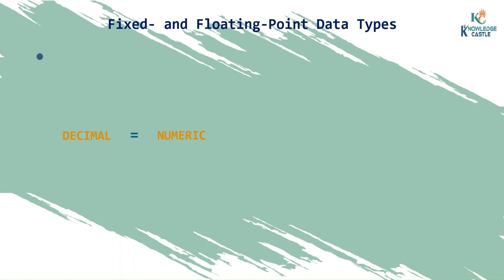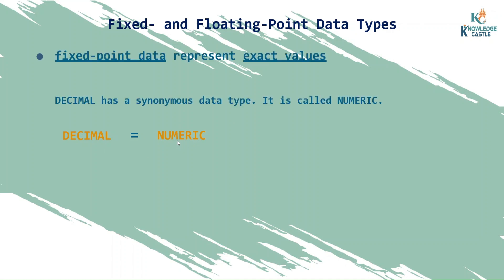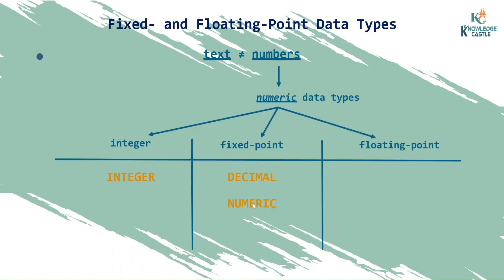SQL has a synonym for decimal called numeric, and decimal is going to be outdated. SQL and other platforms may remove decimal from their library soon, so you will use numeric instead. Everything learned for decimal is absolutely the same for numeric — just write numeric(precision, scale) instead of decimal.